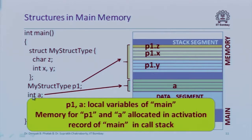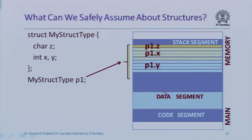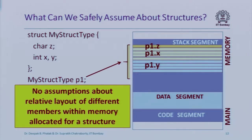Local variables are allocated on the stack. Most compilers allocate the first byte for Z, the next four bytes for X, and the next four bytes for Y — that's the natural way. However, the C++ standard does not require the compiler to do this. For example, it can put Y first, then Z, then X. So you should not make any assumptions about the relative layout of members within the memory allocated for a structure.